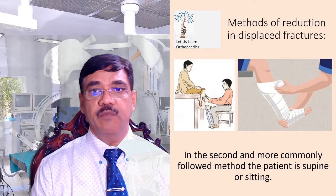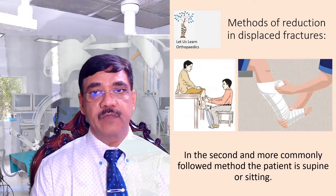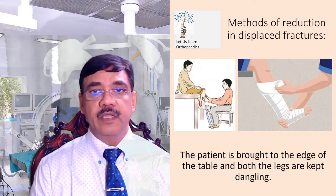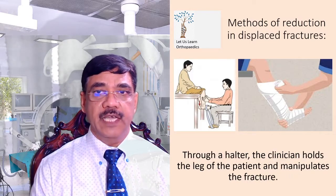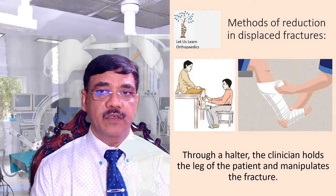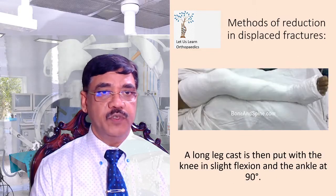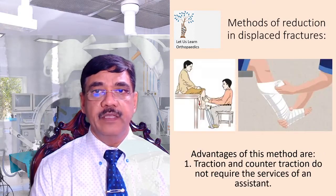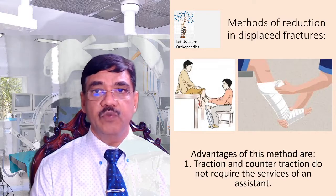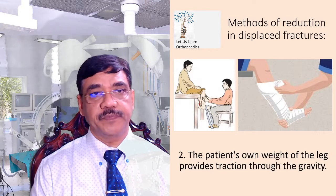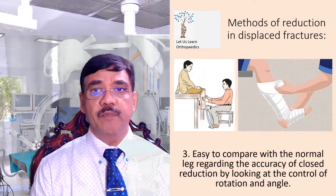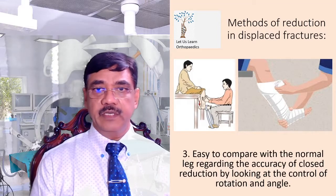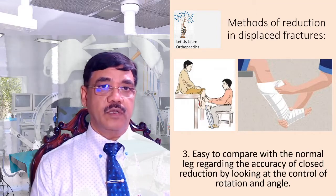The second, more commonly followed method has the patient supine or sitting, brought to the edge of the table with both legs dangling. Through a halter, the clinician holds the leg and manipulates the fracture using both hands. A long leg cast is then put with the knee in slight flexion and the ankle at 90 degrees. The advantage is that the patient's own leg weight provides traction through gravity, and it is easy to compare with the normal leg for accuracy of reduction regarding rotation and angle.